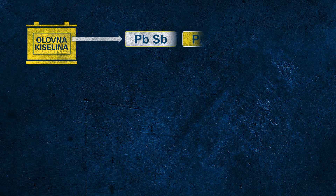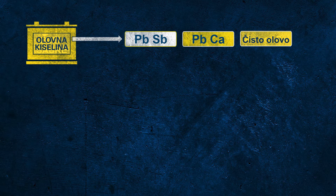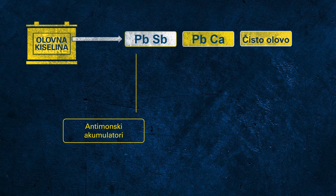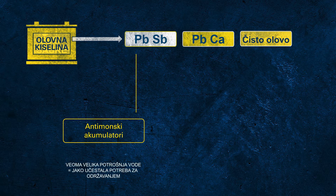When talking about lead, we're actually talking about the lead alloy used to produce the grids. There are different alloys potentially used for batteries. PBSB indicates so-called antimony (SB) batteries, and antimony batteries have a very high water consumption.